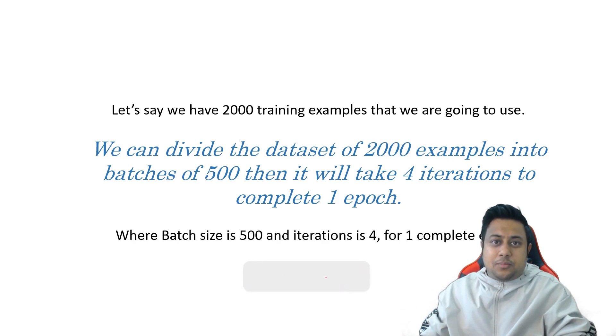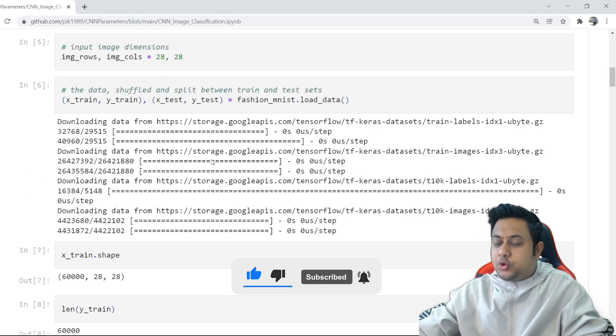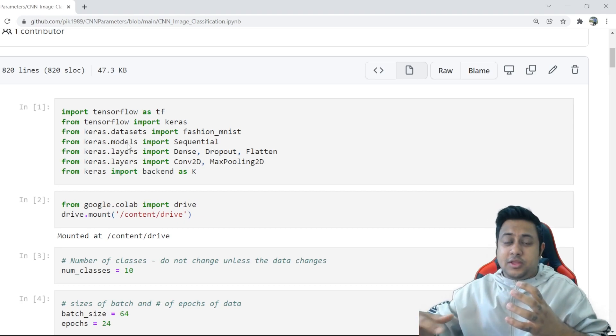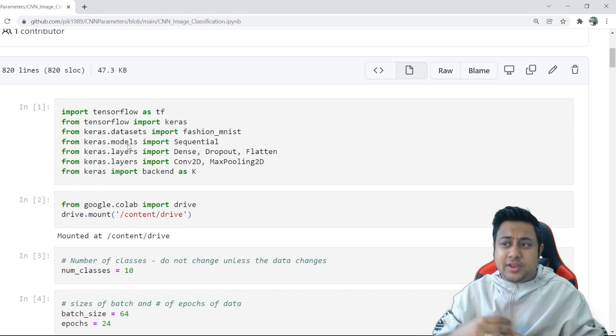That's all about the topic. We'll quickly jump into the practical code to show you how things happen. Now we quickly jump into the code part. This is one of the codes related to the CNN parameters.